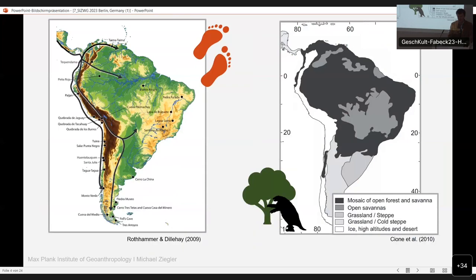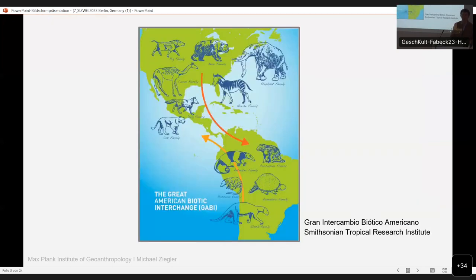And just like humans will be bottlenecked through the isthmus of Panama onto this larger continental platform, so were animals over time during the Great American Biotic Interchange. Millions of years of intercontinental dispersal of taxa, trading fauna back and forth between South and North America.